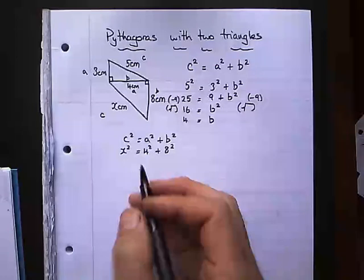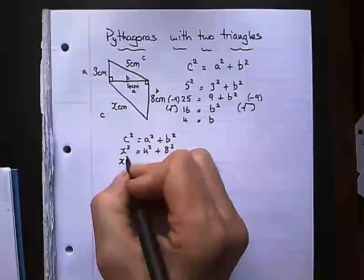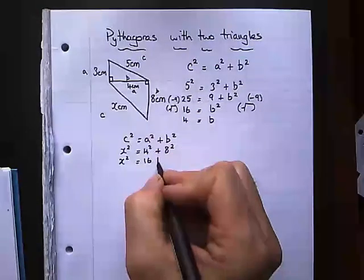So I'll square all the numbers. X squared equals 16 plus 64.